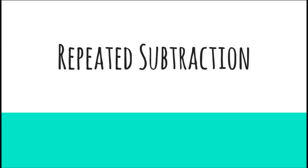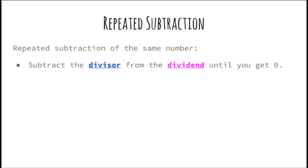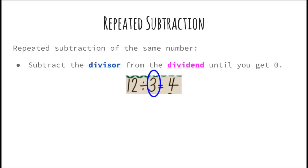Division strategies. The first division strategy that we are going to do today is called repeated subtraction — repeated subtraction of the same number. Subtract the divisor from the dividend until you get to 0. For example, 12 divided by 3 equals 4. 3 is your divisor, which is colored blue. 12 is colored purple, which is your dividend.